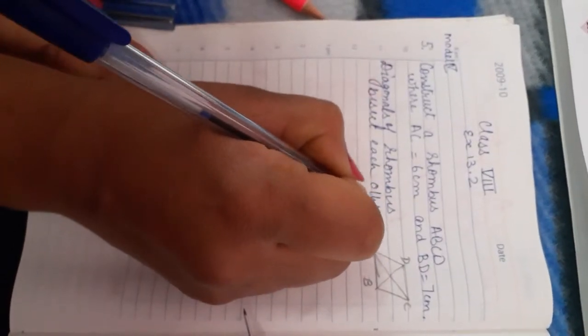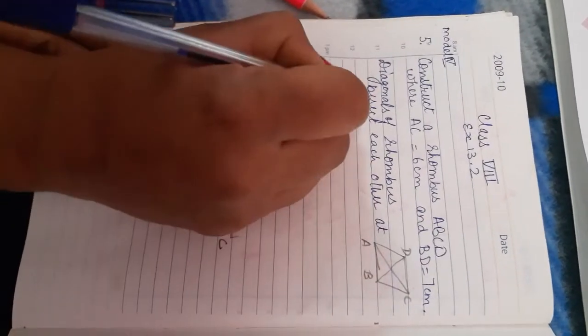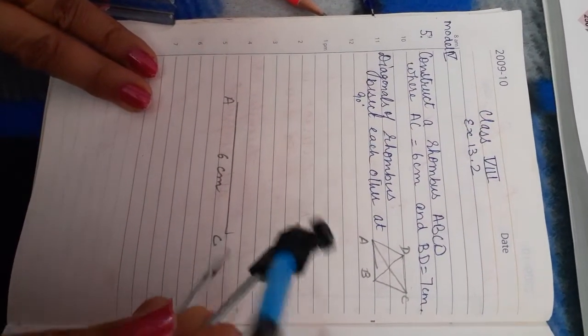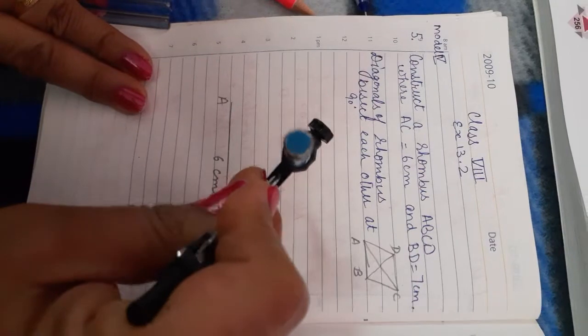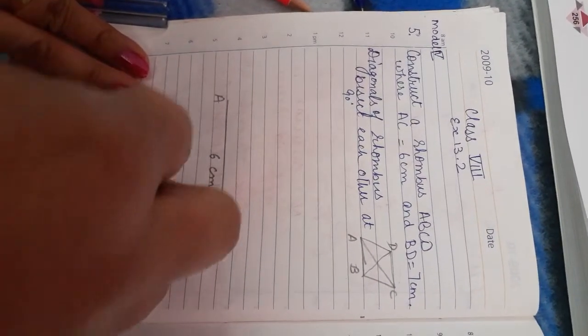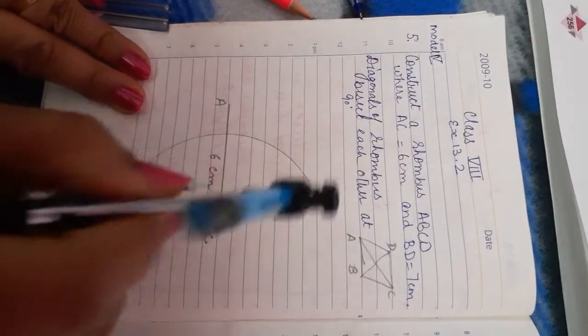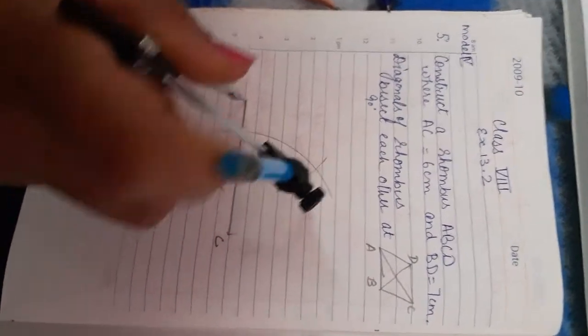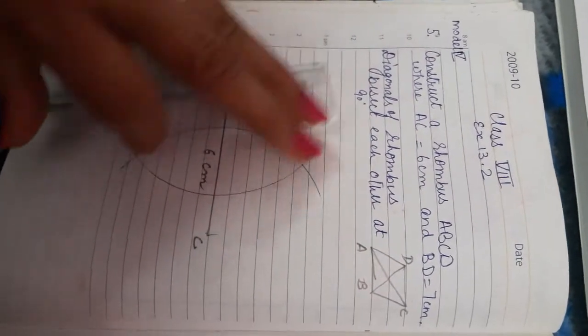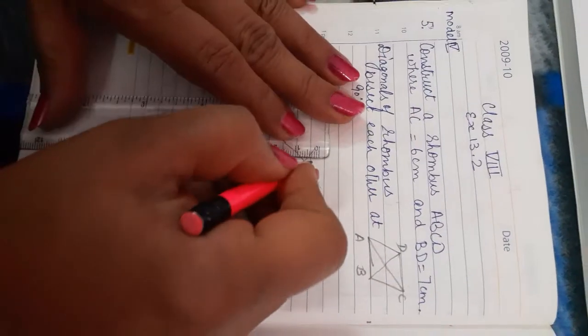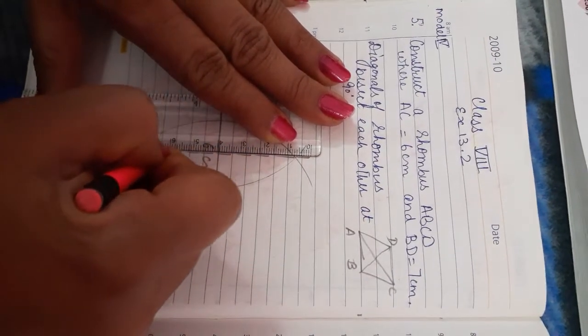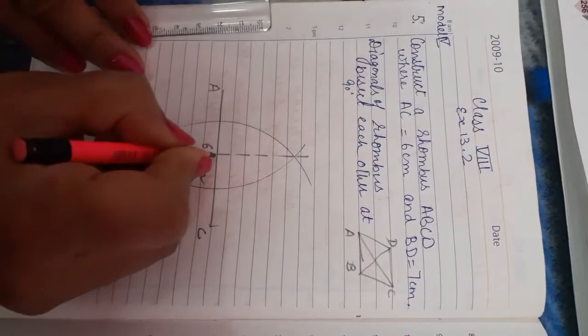First of all, we will draw the perpendicular bisector of AC. Open the compass more than half and draw perpendicular bisector by placing it at point A and point C. This will give us the midpoint of AC line segment.